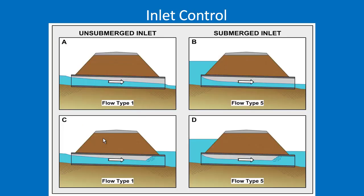The inlet control scenarios show flow types 1 and 5, each with two sub-scenarios: outlet submerged and outlet unsubmerged. For flow type 1, the inlet is unsubmerged. Counterintuitively, even when there's a large pile of standing water at the tailwater and the outlet appears submerged, the culvert can still function under inlet control — meaning the inlet edge is controlling capacity, not the tailwater elevation.